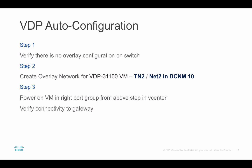In step 1, we verify that there is no overlay configuration on the switch. In step 2, we create an overlay network for that particular VM — VDP 31100, part of Tenant 2 — in DCNM 10. Finally, we power on the virtual machine and verify connectivity.